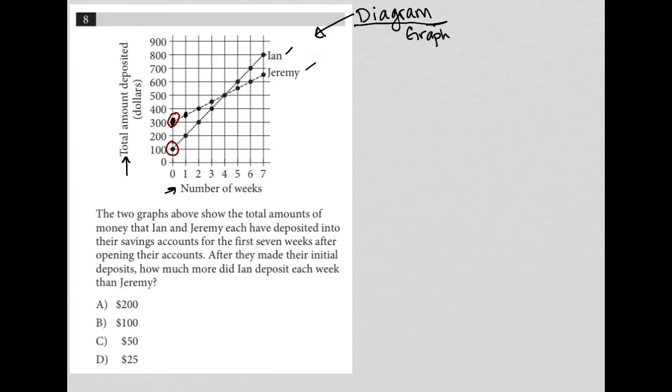Okay. Well, how much, first of all, did Ian deposit each week? So on the Ian graph, it looks like Ian starts off with a hundred dollar deposit. And then at the end of week one, he's up to 200 and then 300 and then 400. So it looks like Ian is depositing $100 each week, right? So $100 per week.